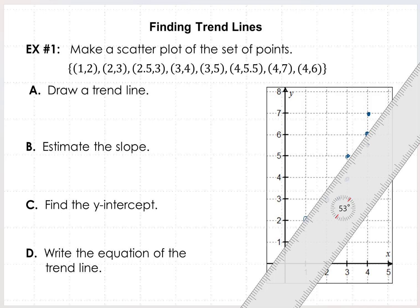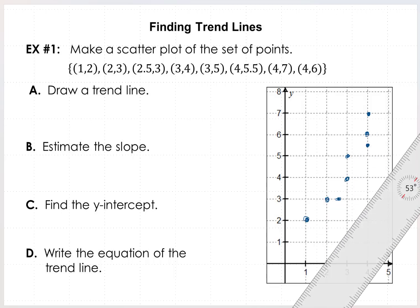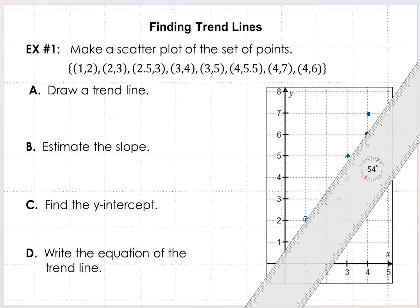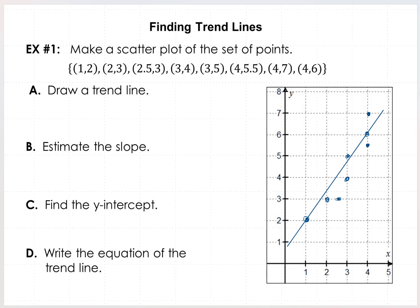Now in this next example you can tell that I've made a scatter plot by plotting the data points that were given and I've got my ruler out here. I'm going to choose to use the (1,2) and the (4,6). And that's going to be my two points I'll use to draw a trend line. We can calculate the slope. So our slope is 6 minus 2 divided by 4 minus 1. So our slope is going to turn out to be 4 thirds.